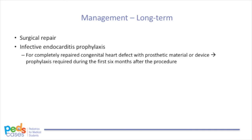In terms of long-term management of Tetralogy of Fallot, we need to consider surgical repair and endocarditis prophylaxis. Surgical repair usually takes place within a few months of the diagnosis — this is the definitive treatment. It involves closing the VSD and enlarging the right ventricular outflow tract. The procedure may be valve-sparing if the stenosis is mild to moderate, but in cases of moderate or severe stenosis, surgical management may affect the pulmonary valve and result in regurgitation postoperatively. These children will often need a pulmonary valve replacement later in life.